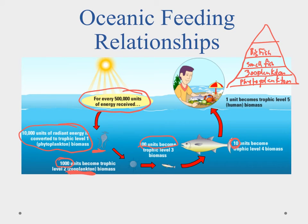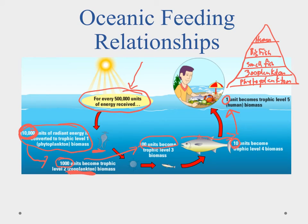Finally we reach the apex of our pyramid — humans. Notice only one unit of energy remains. So from half a million units of energy received, only 10,000 get converted into the energy pyramid through phytoplankton, and every step we take we lose 90% — that 90% goes into living, reproduction, and other processes. Only 10% moves on. For half a million units of energy, we as humans are only able to get about one unit.